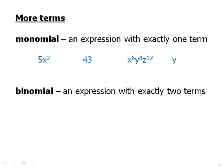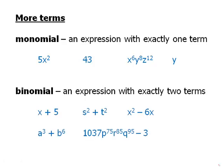A monomial is an expression with exactly one term. All of these are monomials. They are single terms. It could be just a number, it could be just a variable, or a product of numbers and variables. A binomial is an expression with exactly two terms. Here are a bunch of binomials, some of them simple, some of them not so simple.